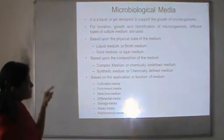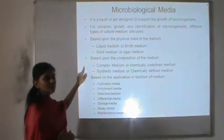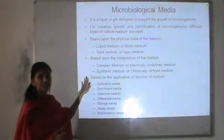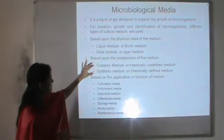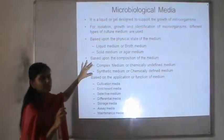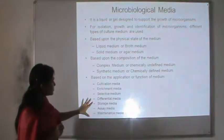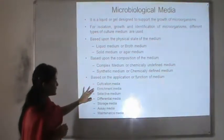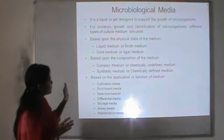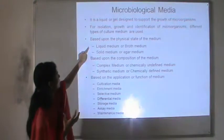Based upon the composition of the medium, there are two major types: complex medium and synthetic medium. Complex medium is also known as chemically undefined medium, whereas synthetic medium is known as chemically defined medium. These two types are based upon what the components are. Based upon the application or function of the media, there is a list which includes cultivation media or enrichment media, selective media, differential media, storage media, assay media, and maintenance media. Next, we will look into the properties and examples of all these media.